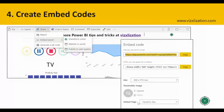Now let's learn how to create embed codes. The first thing you need to do is publish your report from Power BI Desktop to the Power BI service. You also need a license — in my case I have a Power BI Pro license, which is why I can publish reports. After publishing, go to Power BI service and look for the right workspace.